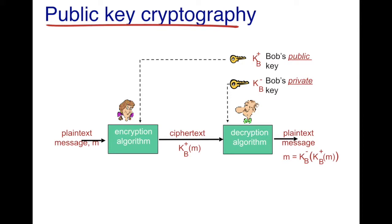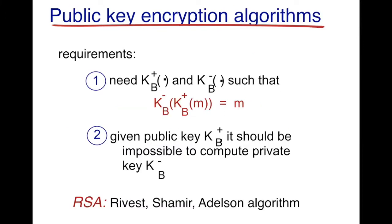Note that as the private key of Bob is known only to Bob, no other person can actually decode the ciphertext. To create a public key cryptography system, the key requirement is that kb+ and kb− — the encryption and decryption algorithms — when they work together on the message m, they produce the original message m.